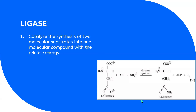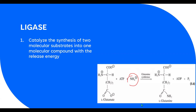Ligases join two molecules together. For example, an ammonium ion is joined to another molecule to produce a single product. When two smaller atoms or groups join together to form one larger molecule, the enzymes catalyzing that reaction are called ligases.